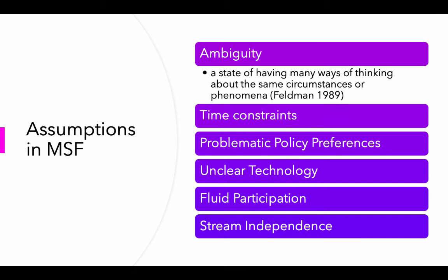There are a few assumptions we need to keep in mind when talking about multiple streams framework. The first is ambiguity. This assumption of ambiguity exists in MSF — ambiguity is a state of having many ways of thinking about the same circumstances or phenomena. In other words, we can all look at the same indicators and see different things, which means there is not just one rational solution to a given problem. Because of this ambiguity, a multitude of solutions may exist to any given problem. It's not uncertainty, which can be cured by more information — it's ambiguity about what is the right thing to do.